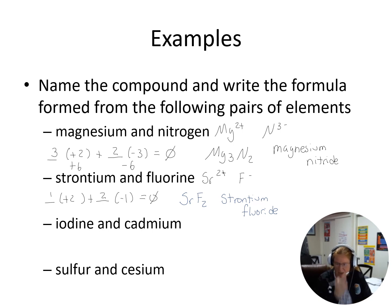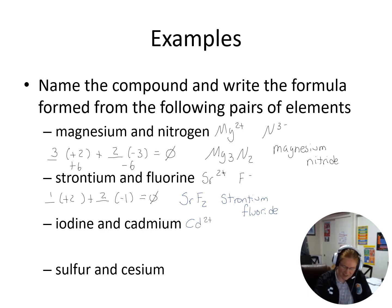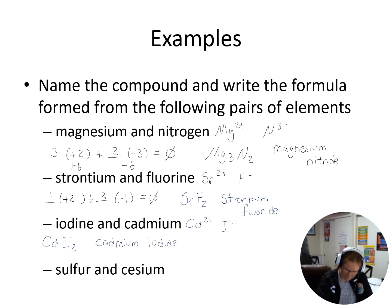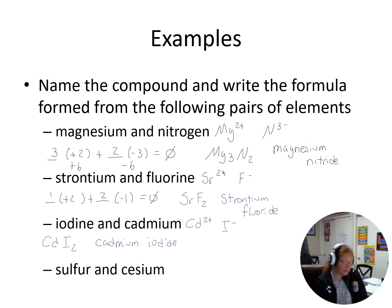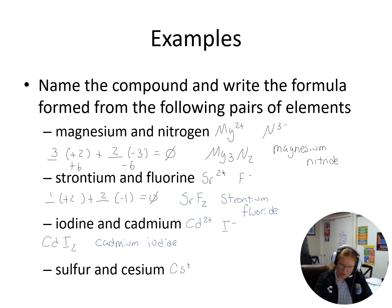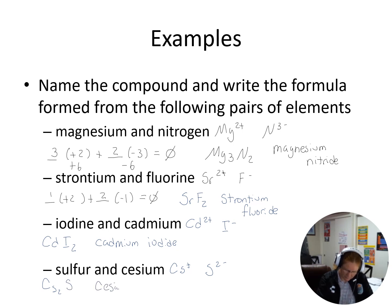Iodine and cadmium — we always put the cation first, then the anion. Cadmium is a transition metal that's always plus two. Iodine is group 7A, so minus one. By charge balancing, we get CdI₂, cadmium iodide. Next, sulfur and cesium: cesium is Cs, group 1A, plus one. Sulfur is group 6A, minus two. We balance the charge and get Cs₂S, cesium sulfide.